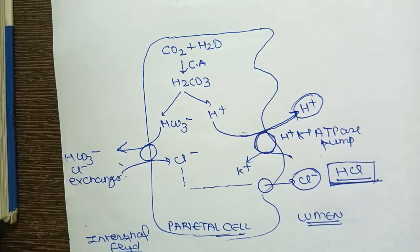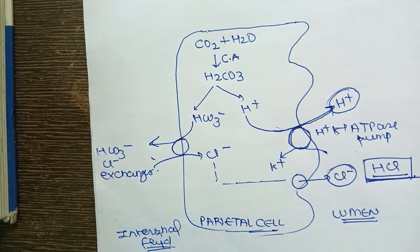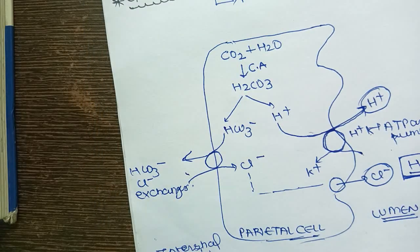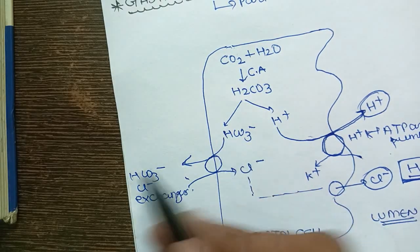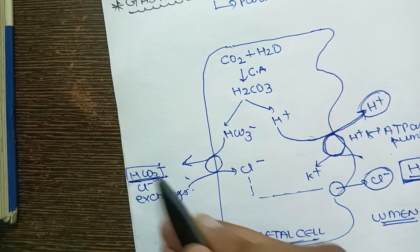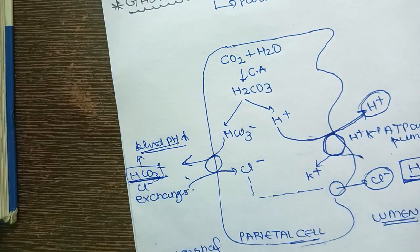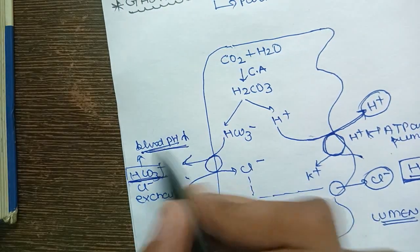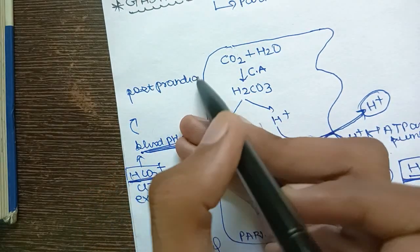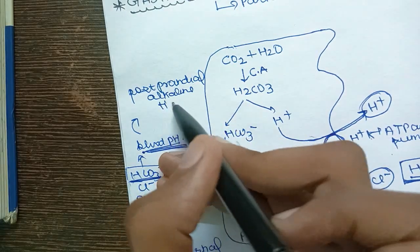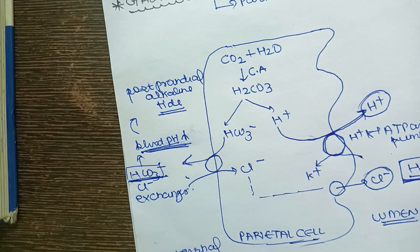So this is the secretion, most important. Two number question: what is post-prandial alkaline tide? The basic concept which I have told you is that bicarbonate is secreted into interstitial fluid, so blood pH has increased - alkaline blood. Just after we eat, blood pH has increased. So this is post-prandial alkaline tide. The name comes from this simple concept that bicarbonate increases blood pH, and this is why it's a favorite exam question.